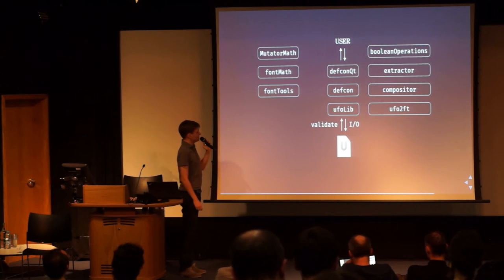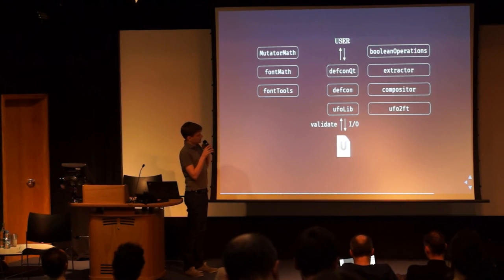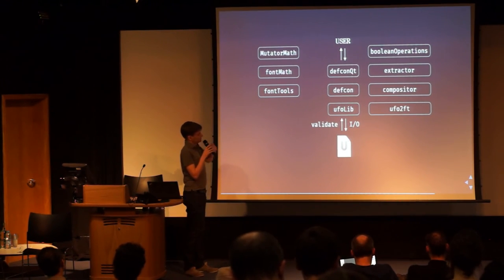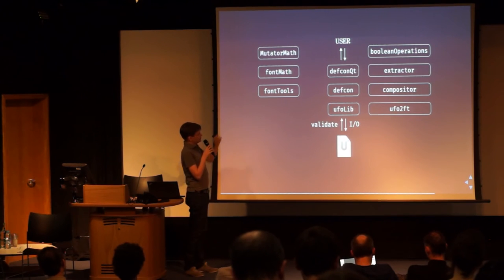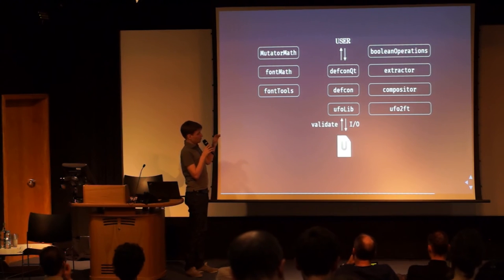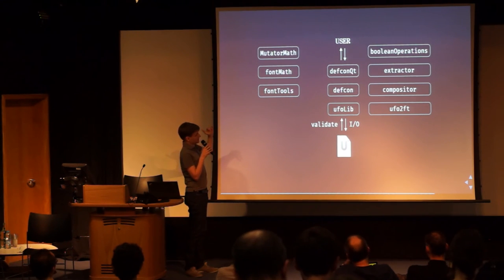Here we have the object model of the application. Between the UFO and the user, we first have a library called UFOlib that reads, writes, and validates UFO data. Then you have DEFCON, which provides all the objects and various facilities. And then you have the DEFCON-Qt package, which provides all the base widgets to use in DEFCON and Qt applications, regardless of the application — it's a refactoring I did out of the TrueFont package. It's always this idea of shared layers of functionality, and only the last block is specific to the app.